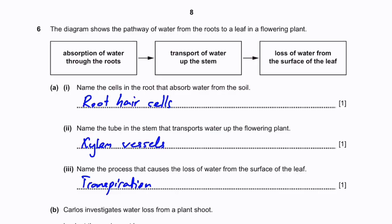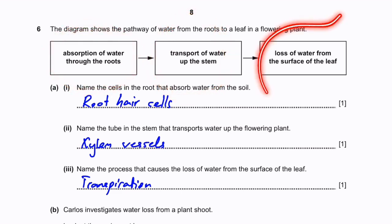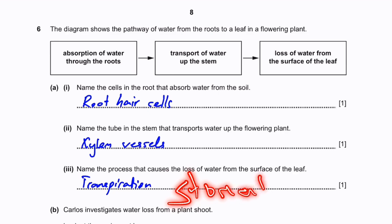Question 6. The diagram shows the pathway of water from the roots to a leaf in a flowering plant: absorption of water through the roots, transport of water up the stem, and loss of water from the surface of the leaf. Name the cells in the root that absorb water from the soil - they are root hair cells. Those cells send water up to the xylem vessels, which is the tube in the stem that transports water up the plant. The process causing loss of water from the surface of the leaf is transpiration from the stomata.